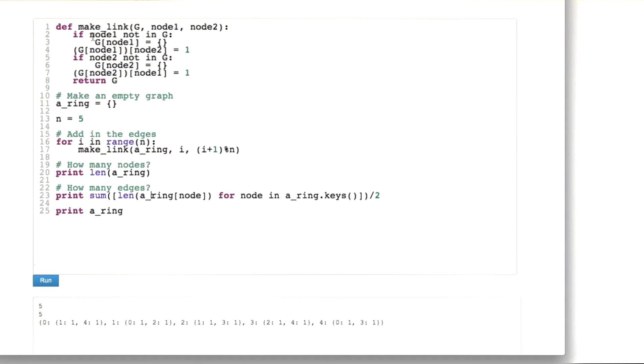What make link does, and I'm going to use the same definition throughout, is it takes a dictionary, a graph, and two nodes that we want to connect together. It checks whether the first node is already in the graph, and if it is not, then it creates an empty dictionary for that node. Same thing for node 2. Then it goes to the dictionary for node 1 in the graph, and says that there is a connection to node 2. So this basically just establishes the connection between node 1 and node 2, so that later we can go and test for it if we want to.